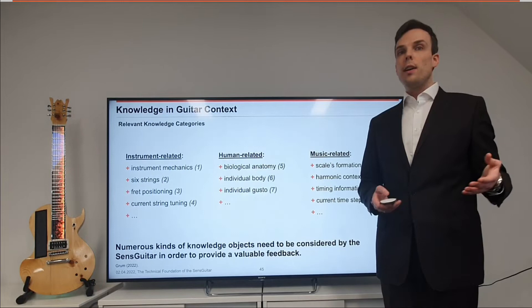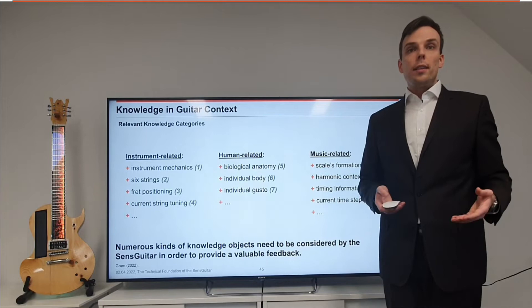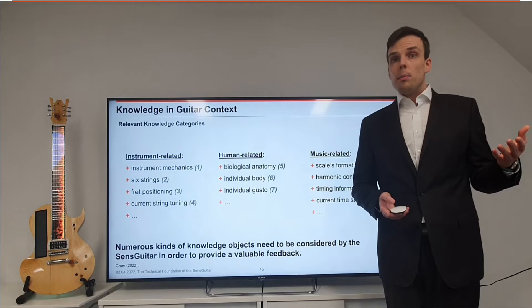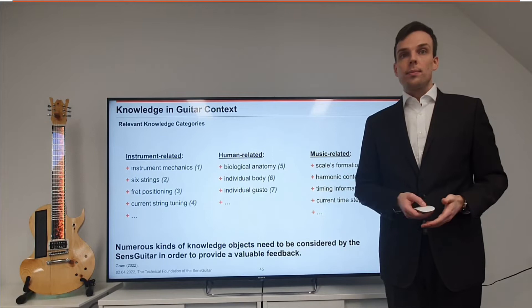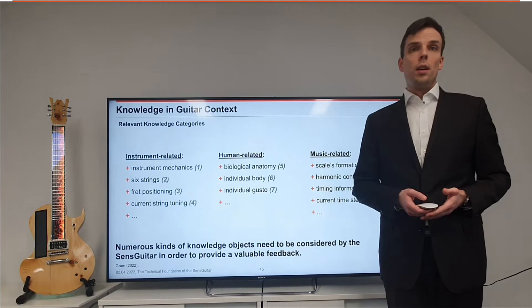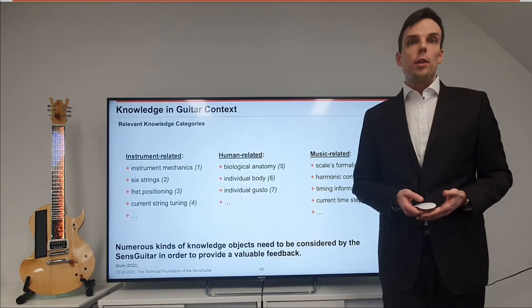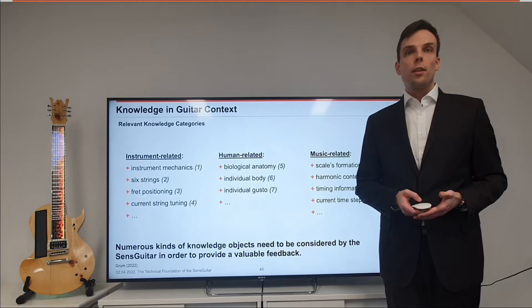The second category is human-related knowledge — such as, for instance: fifth, biological anatomy. Is a human playing the guitar, having two arms and ten fingers? Sixth, individual body: does the individual have all ten fingers? Maybe one finger is missing. Am I left-handed or right-handed? Seventh, individual gusto: are there individual preferences, competence levels or preferences for one fingertip or another? For example, the beginner will be happy to take notes on lower frets because higher fret positions are uncomfortable.